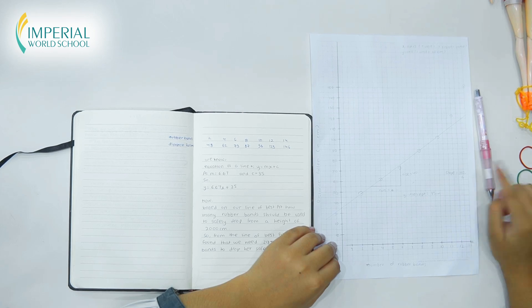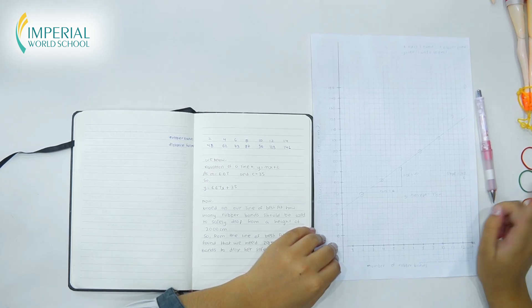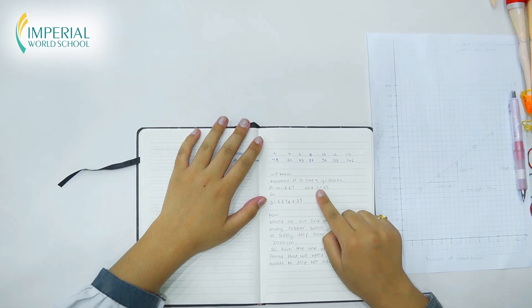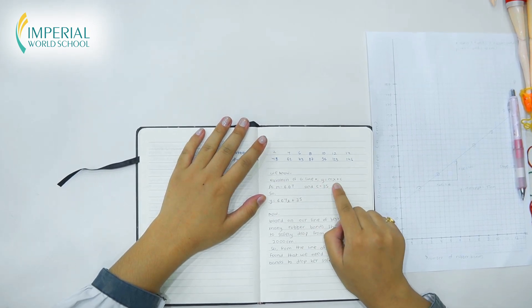As we know, slope is rise over run, which we've discovered is 40 by 6. Now we know equation of a line is Y equals MX plus C.